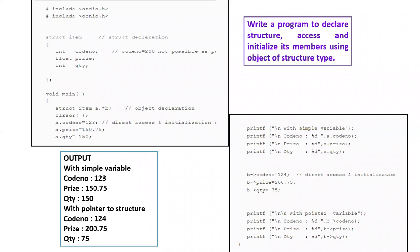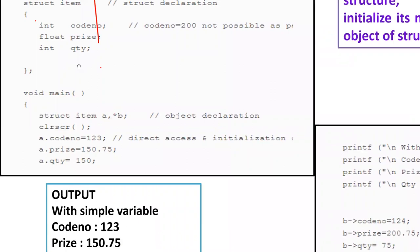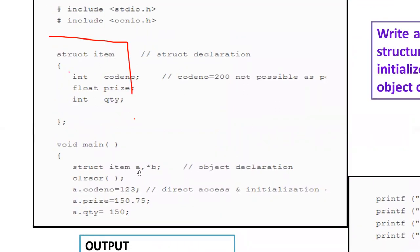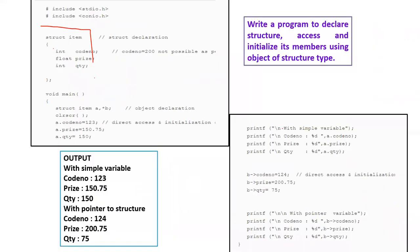This is a simple program to declare a structure and access and initialize its members. The structure is declared here, this is the declaration part, this is the name of the structure, and in main you declare objects — an ordinary object A and a pointer object B. For the ordinary object, you use the dot operator for direct access and initialization: code number is 123, price and quantity are set to some values. For the pointer object B, you use the arrow operator. Direct access is possible with the help of this object.